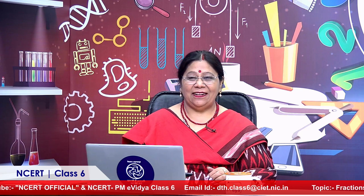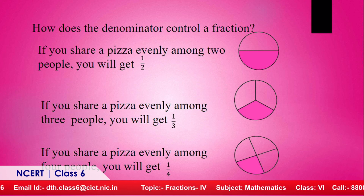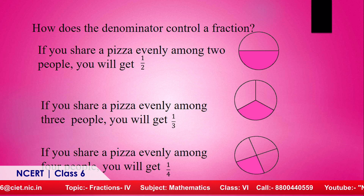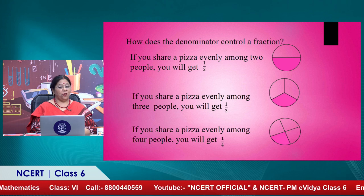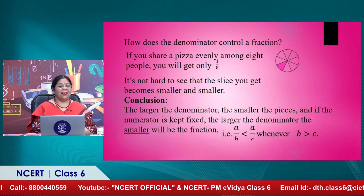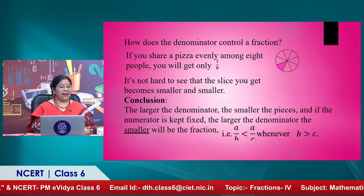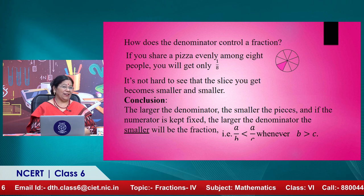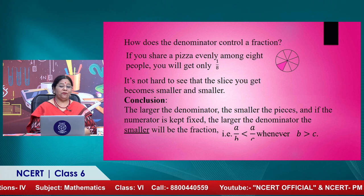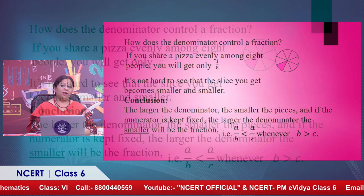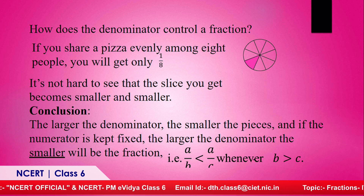Let us start with how the denominator controls the fraction. If you share a pizza evenly among two people, you get one upon two. Among three people, you get one upon three. Among four people, one upon four. Among eight people, one upon eight. The slices become smaller and smaller. So the larger the denominator, the smaller the pieces — and if the numerator is kept fixed, the larger the denominator, the smaller the fraction. That is, a upon b is less than a upon c whenever b is greater than c.